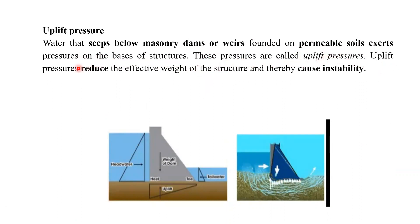Uplift pressure definitely reduces the effective weight of the structure and thereby causes instability. We can see this figure — the pressure distribution diagram for this dam. Below the base of this hydraulic structure, we can also see the pressure distribution diagram, and on the downstream side we can also see the pressure distribution diagram.